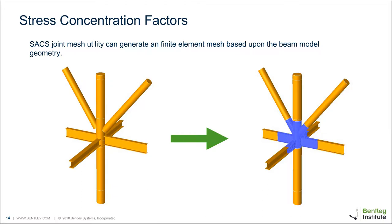The SACS joint mesh utility can automatically generate a finite element mesh based upon the beam model geometry, so you don't have to remodel the connection. The only thing you might have to do is add plate stiffeners or ring plates to add non-modeled elements. Your tubular braces, cords, and beam elements will all come in as meshed elements, and we have a variety of meshing options to help optimize that mesh. It's worth noting that any offsets or other modifications to your beam elements will carry through into the mesh as well.